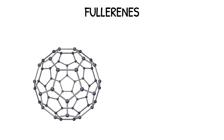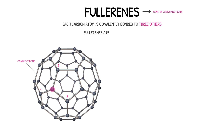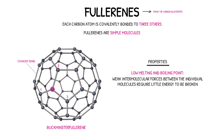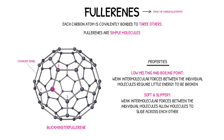We'll start firstly with the fullerenes. Fullerenes are a family of carbon allotropes whereby each carbon atom is covalently bonded to three others. Fullerenes are classed as simple molecules as they contain only a few atoms bonded together. An example is buckminsterfullerene, in which there are 60 carbon atoms arranged into pentagonal or hexagonal balls. Fullerenes have very low melting and boiling points as there are weak forces of attraction between molecules, requiring little energy for these forces to be broken. They are also very soft and slippery materials as the weak intermolecular forces allow the molecules to slide past one another.